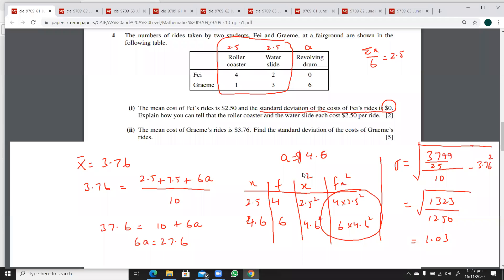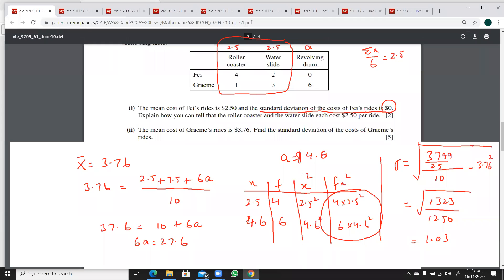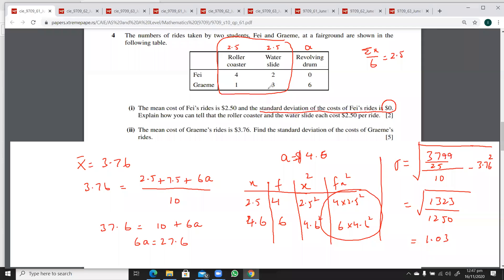So this is the standard deviation. Do you have any questions? I was wondering why there are five marks for this. The five marks were because you had to find the revolving drum's cost. Otherwise, there are never more than three marks for just finding standard deviation. I'm going to move to the next paper.